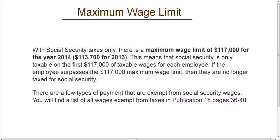This has gone up from the year 2013 when it was $113,700. So this means that you will tax Social Security on the first $117,000. If your employee makes more than $117,000, then the additional amount will not be taxed for Social Security purposes.